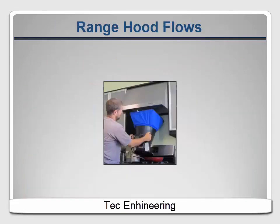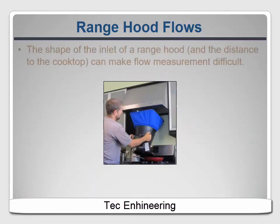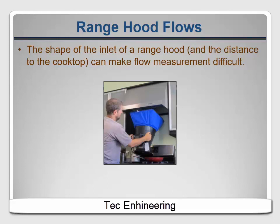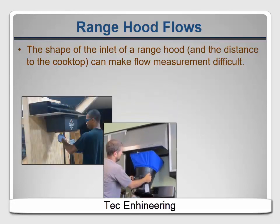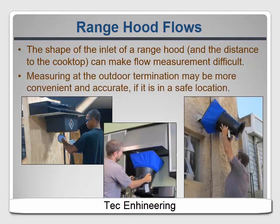Range hood flow rates can be particularly challenging to measure because of the awkward shape of the opening and the sometimes limited distance between the hood and the cooktop. One potential solution is to carry a thin plywood template that will cover the underside of a typical 30-inch range hood, which should work on at least three quarters of the hoods you'll encounter. In other cases, it may be necessary to go outside and measure where the air exits the building, assuming it's not on the roof — but remember you can't do this with the exhaust fan flow meter box, as it's not accurate with air flowing in that direction. As you can see, the flow hood really gives you the most flexibility if you can afford the initial cost.